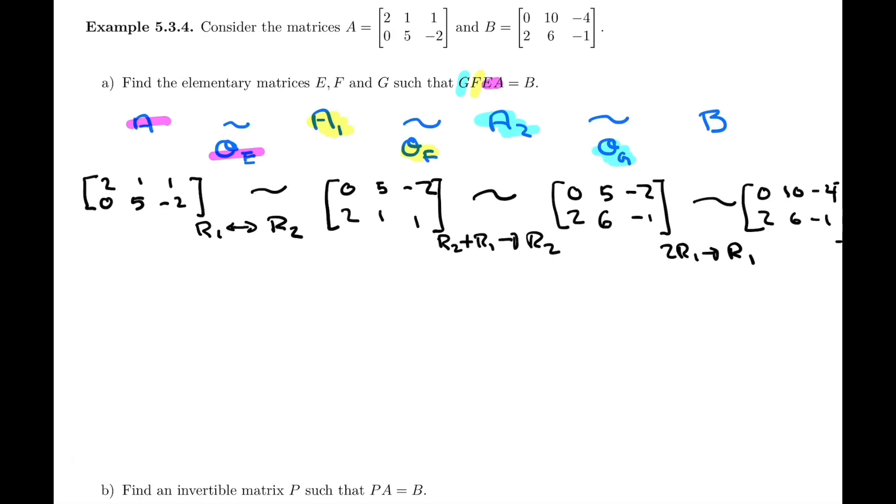And now, of course, we actually want to find what those matrices are, the matrix E, F, and G, because we only have the operation so far. So to find the elementary matrices, of course, we always go back to the identity matrix. So we're going to start with 1, 0, 0, 1.